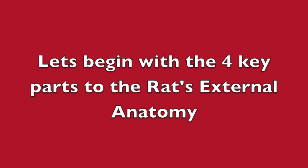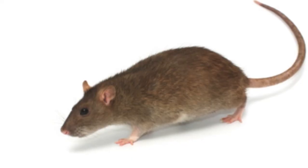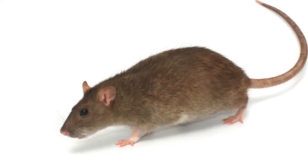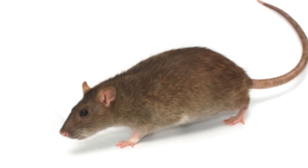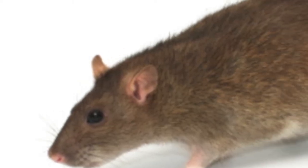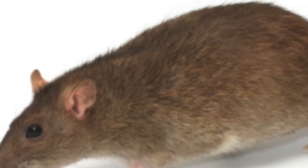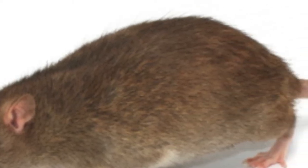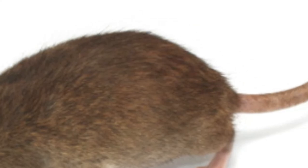Let's begin with the four key parts to the rat's external anatomy. A rat is divided into four parts: the head, the neck, the trunk, and the tail.